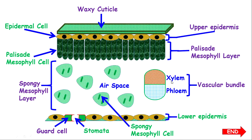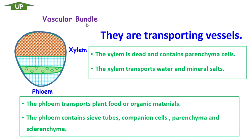Let's look at the vascular bundle. The vascular bundle is made up of transporting vessels — the xylem and the phloem. The xylem is a dead structure; however, it contains parenchyma cells, which are the only living part of the xylem. Otherwise, generally, you simply say the xylem is a dead tissue or dead vessel.